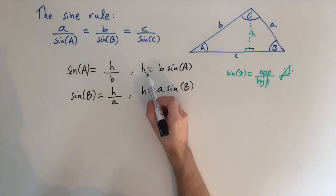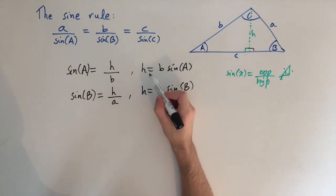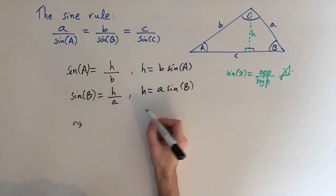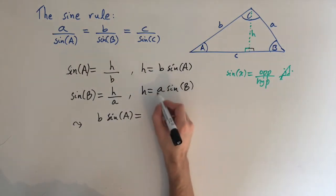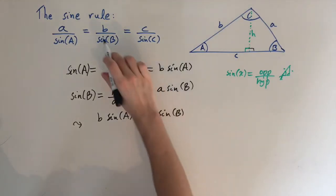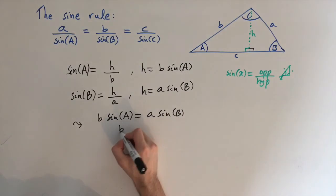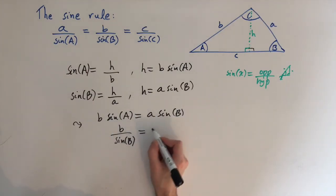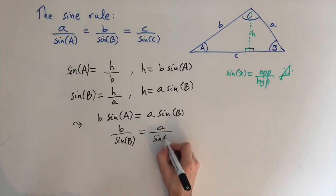And this is really nice because we have two equations for h, and so we can equate them because they're both equal to h. So this tells us we can deduce that b sine a equals h, so it also equals this stuff, equals a times sine of b. And you can see we're almost there. What we do is we divide by sine of a and sine of b, and then we're going to be left with b divided by sine of b if I divide by this, and then this equals a divided by sine of a.